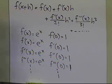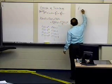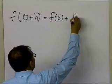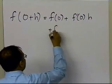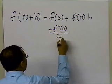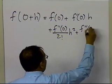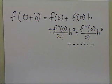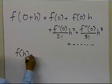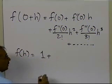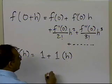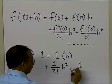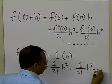Now I'm going to substitute back into the Taylor series with x equal to 0 and h as the increment. The value of the function at 0, plus the derivative of the function at 0 times h, plus the second derivative at 0 divided by factorial 2 times h squared, plus the third derivative at 0 divided by factorial 3 times h cubed, plus all the other terms. Since all those derivative values equal 1, I get f of h equals 1 plus h plus h squared over factorial 2 plus h cubed over factorial 3, and so on.